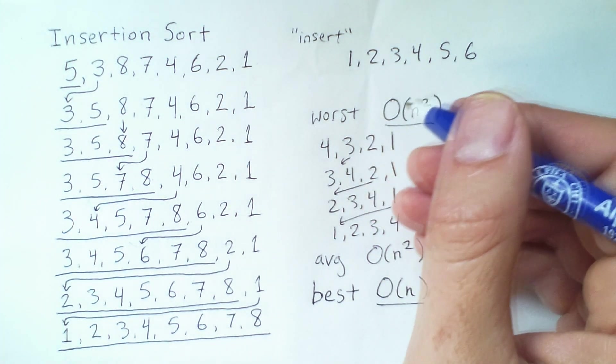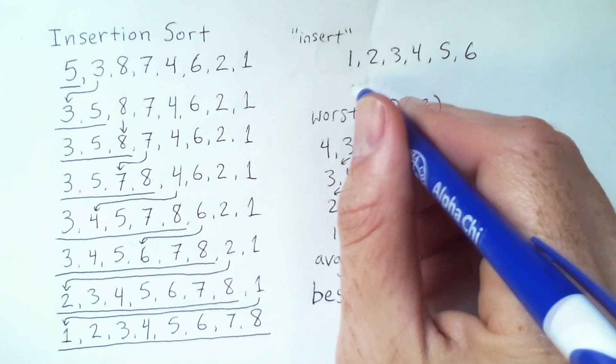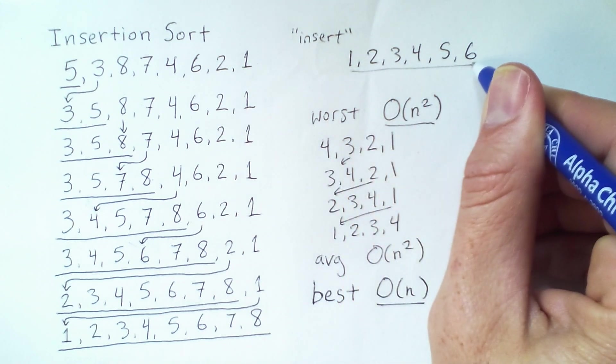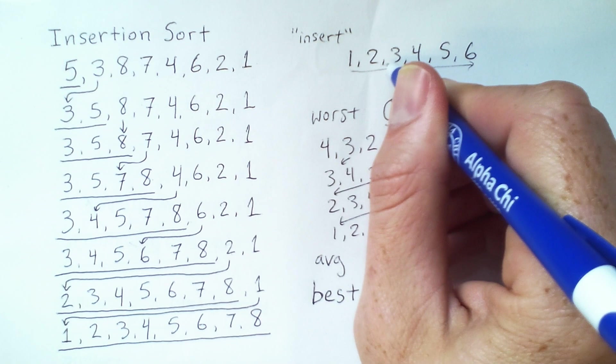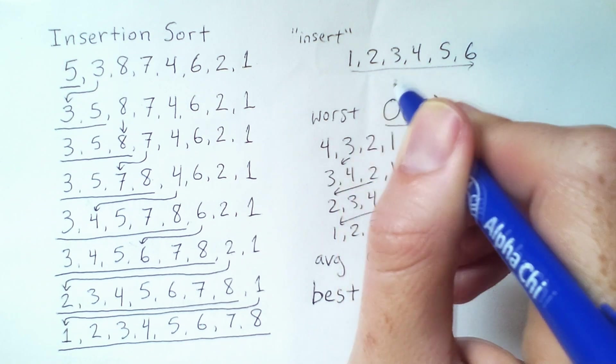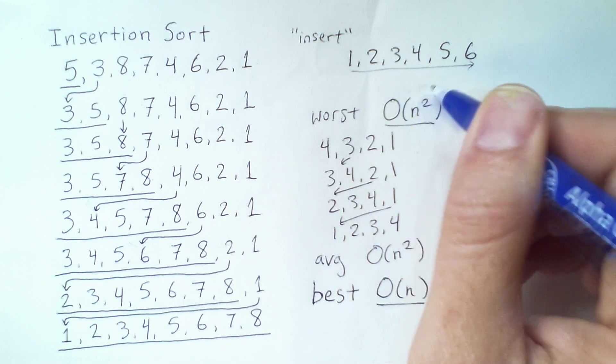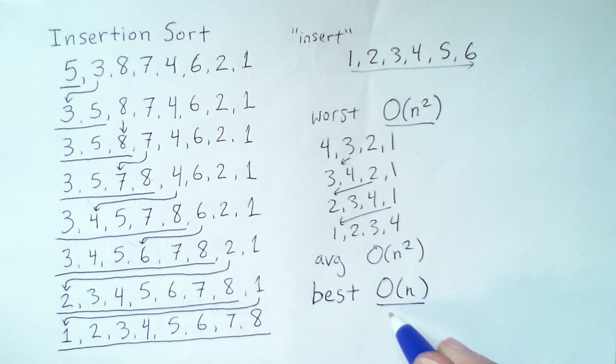So in terms of implementation, there's one loop that's going through all the elements and then another inner loop that shifts elements back. But if that inner loop never shifts anything back, then we only do order of n operations. So insertion sort in practical terms is faster than selection sort.